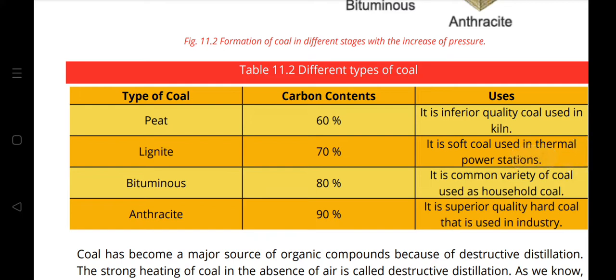Peat contains 60% carbon and is an inferior quality coal used in kilns. Lignite contains 70% carbon and is soft coal used in thermal power stations. Bituminous coal has 80% carbon and is the common variety used as household coal. Anthracite has 90% carbon, is the superior quality hard coal, and is used in industry.